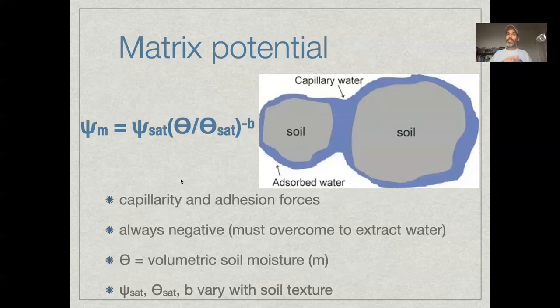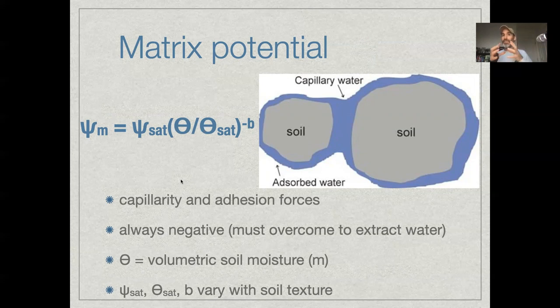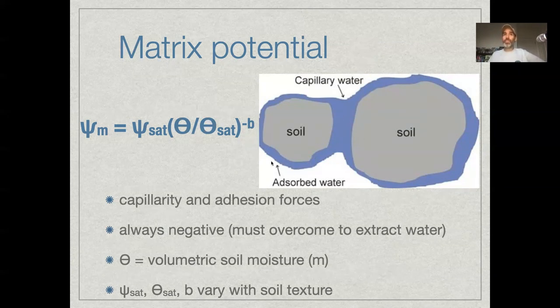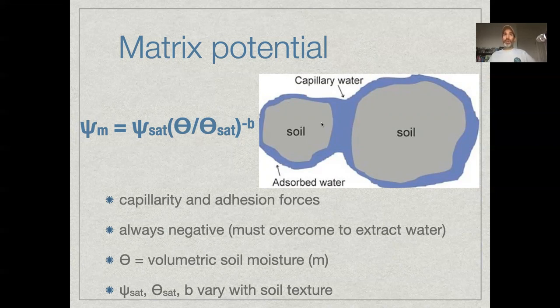So in a nutshell, the matrix potential is due to the tendency of water to adhere and absorb to the particles that are in the soil. So you're going to have these adhesive forces of water sticking to particles, and you're going to have these capillary forces associated with water that's between two particles. So you have this capillary water in between these two soil particles, and you have this layer of water that surrounds the soil particle.